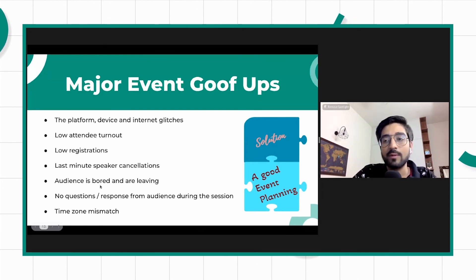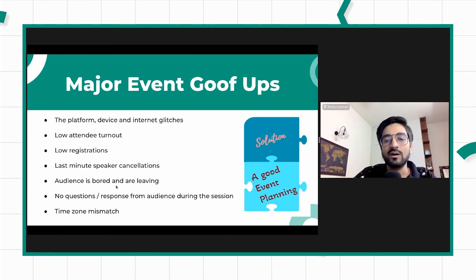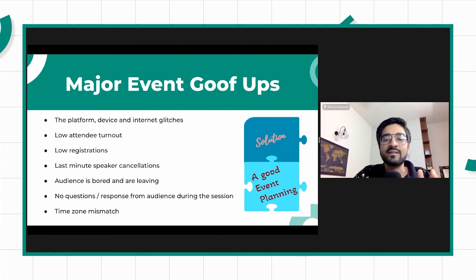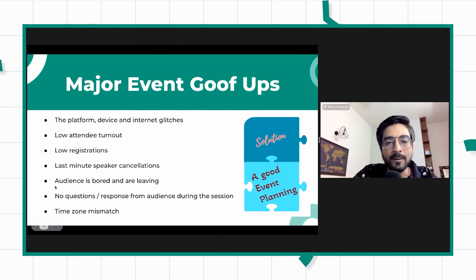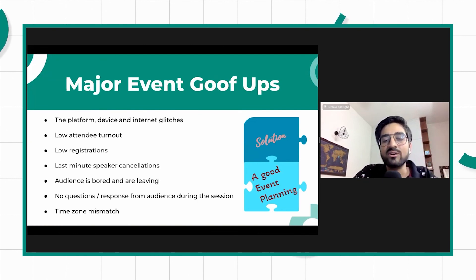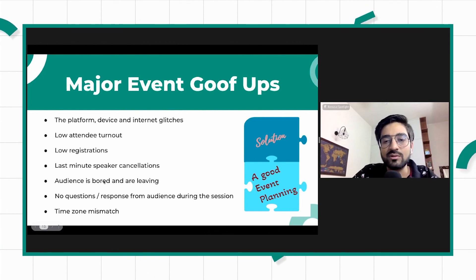Audience getting bored is also a very big problem — it was one of the biggest challenges mentioned by Indian community builders. Make sure you don't talk about things which are not relevant or not entertaining in your events. People come for either learning or entertainment, so keep a healthy mix of both. Audience not responding or asking questions is another issue to watch for. Also, time zone mismatch — sometimes you send invites without the time zone written, so try to use tools that are time zone-friendly by design, like Google Calendar, which handles it for you automatically.